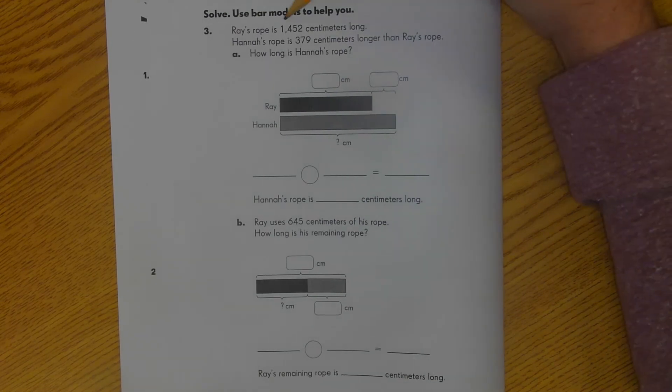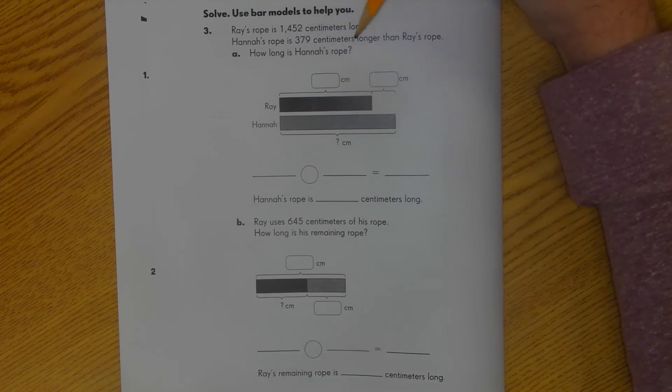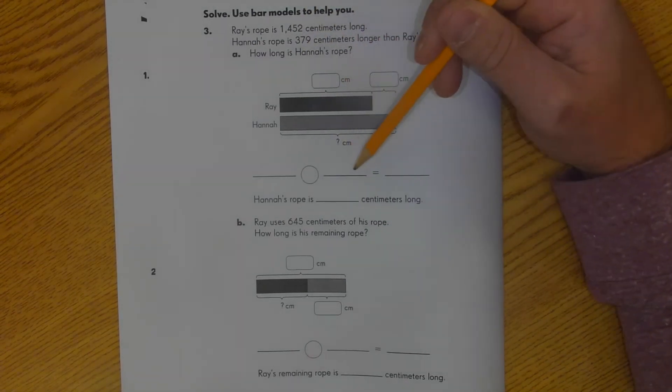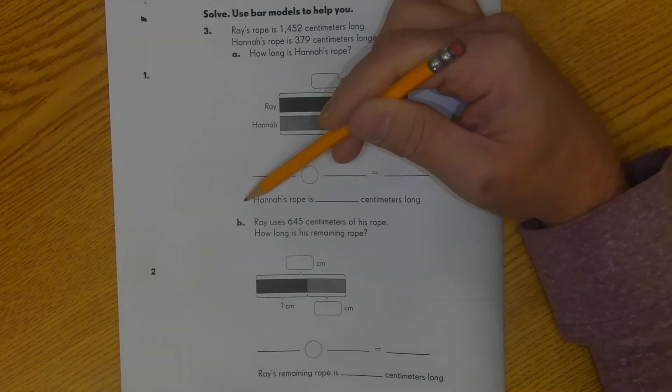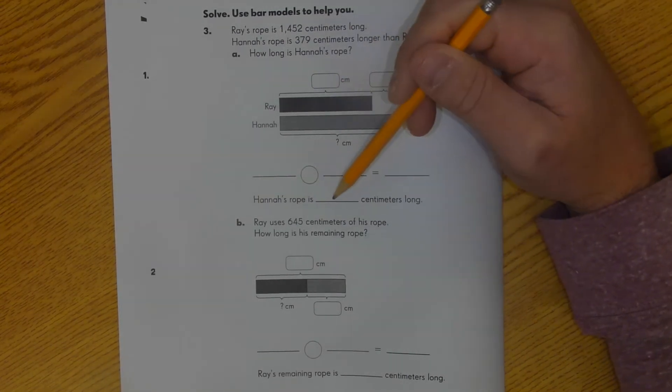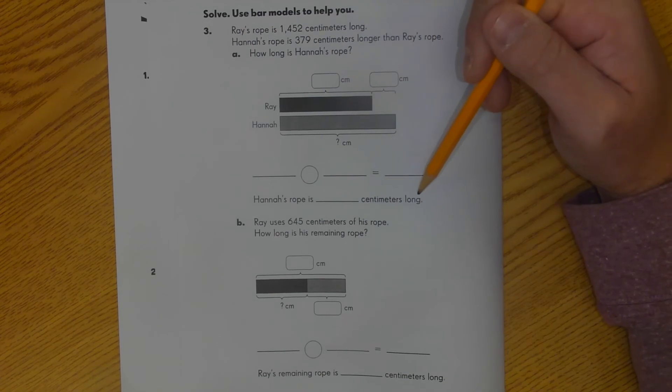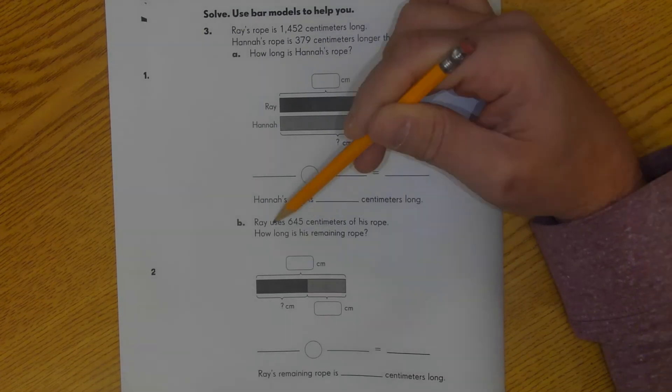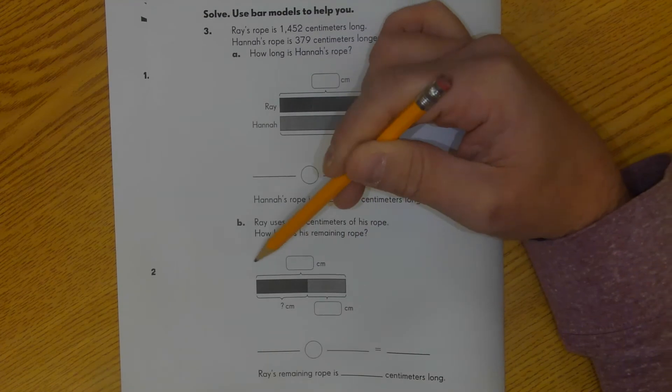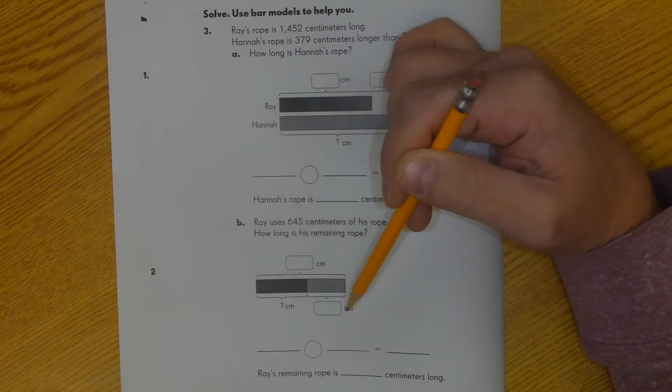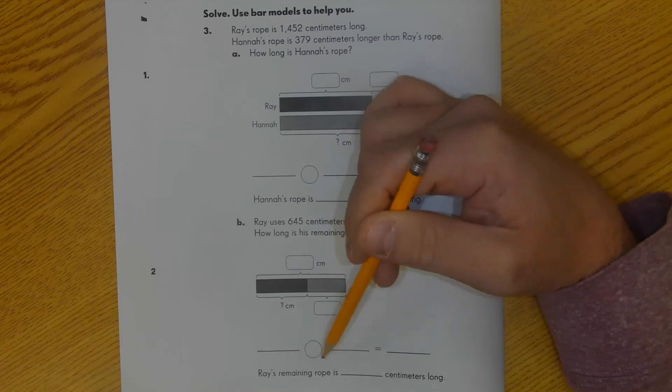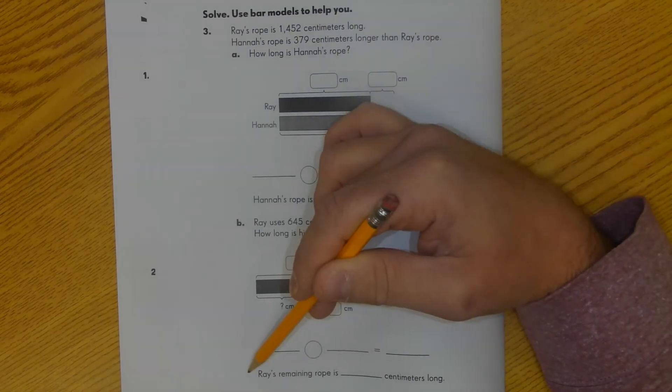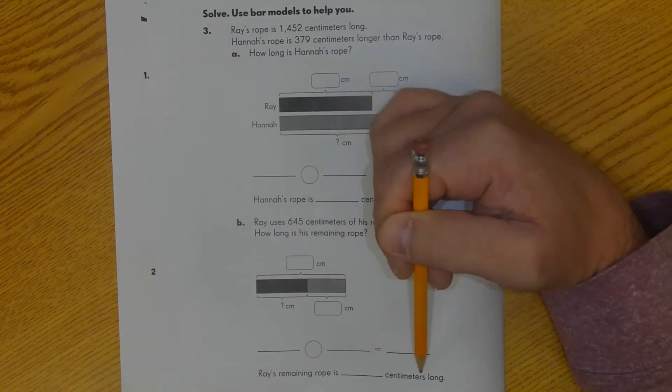Number three. Ray's rope is 1,452 centimeters long. Hannah's rope is 379 centimeters longer than Ray's rope. How long is Hannah's rope? Bar model. Empty spaces for my number sentence. Answer in the form of a sentence. Hannah's rope is some number of centimeters long. Part B or step two. Ray uses 645 centimeters of his rope. How long is his remaining rope? Bar model. Empty spaces for numbers. Empty spaces for number sentence. Circle for addition or subtraction. And then answer in the form of a sentence. Ray's remaining rope is some number of centimeters long.